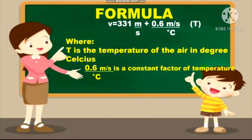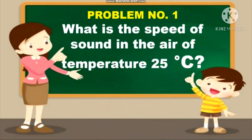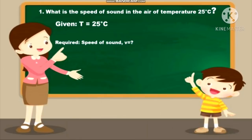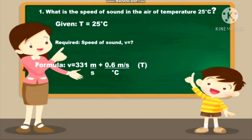Let's try it with a problem. Problem number one: What is the speed of sound in air at a temperature of 25 degrees Celsius? First, identify what is given — the temperature is 25 degrees Celsius. Then identify what is being asked — the speed of sound. The formula we will use is V = 331 m/s + 0.6 m/s per degree Celsius multiplied by T.